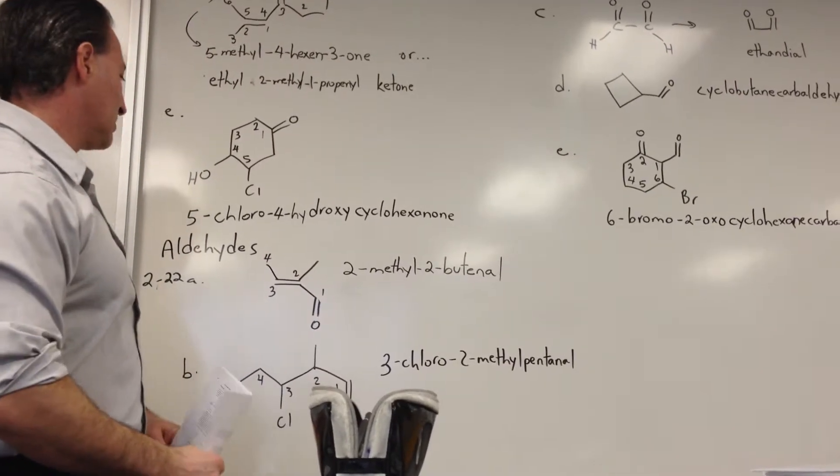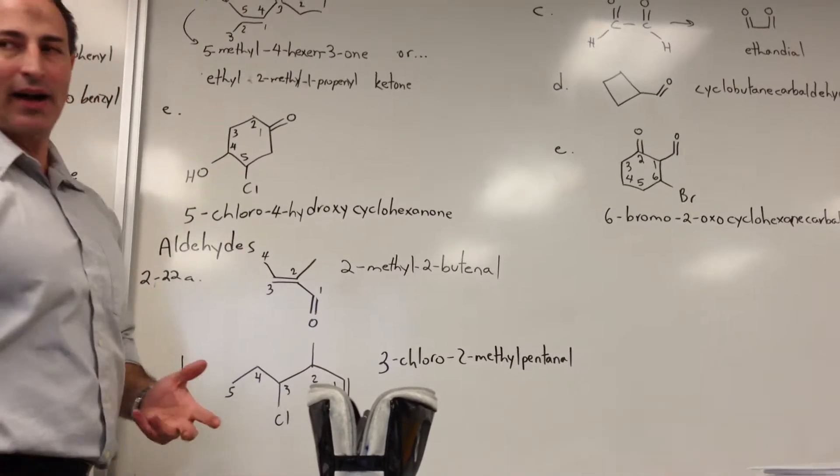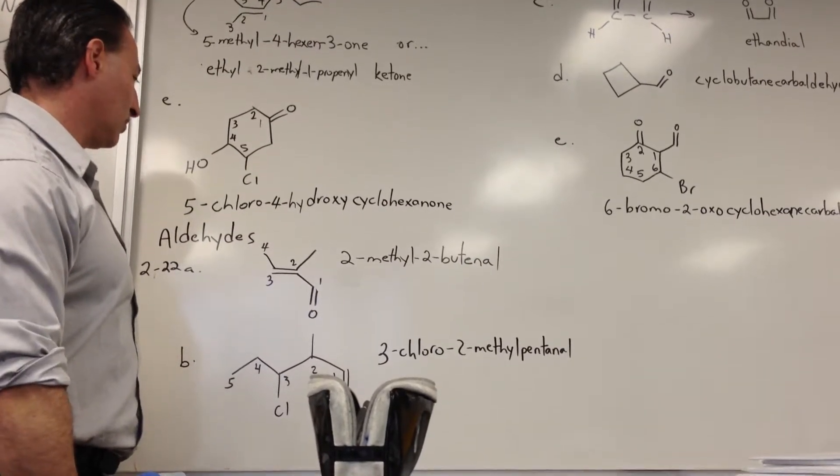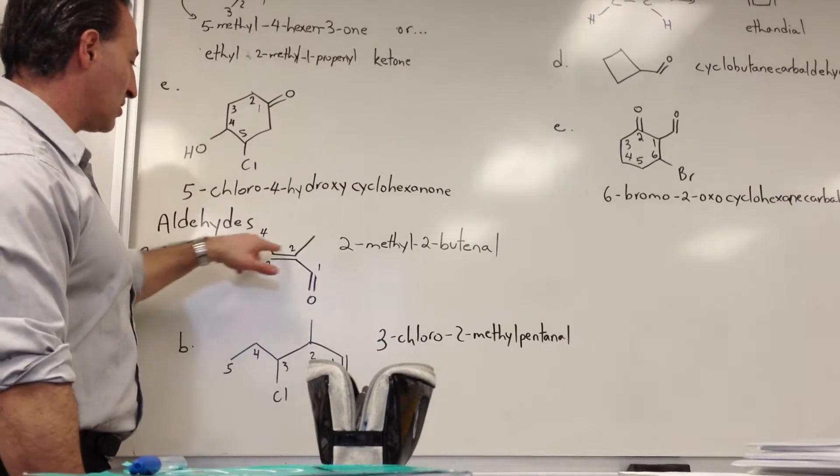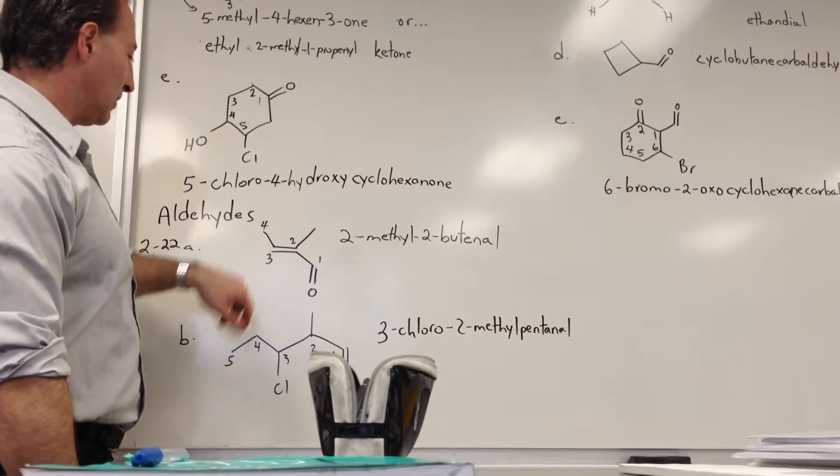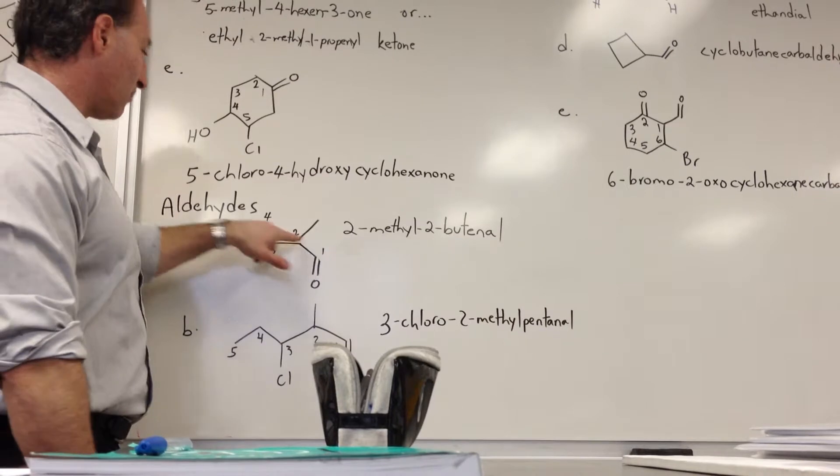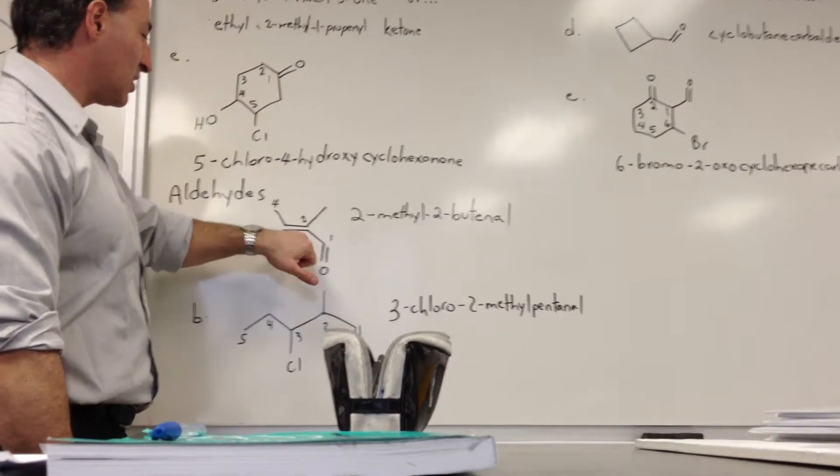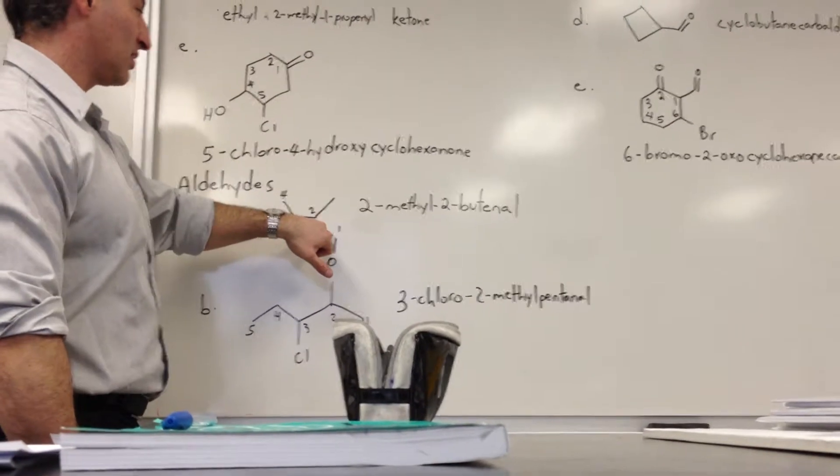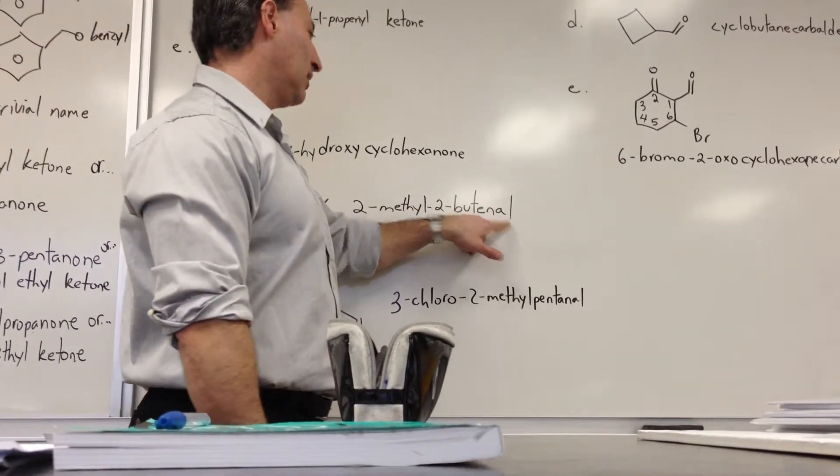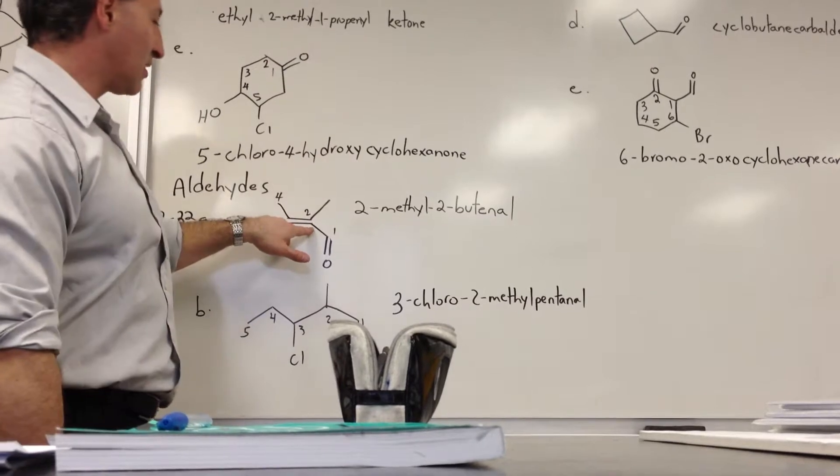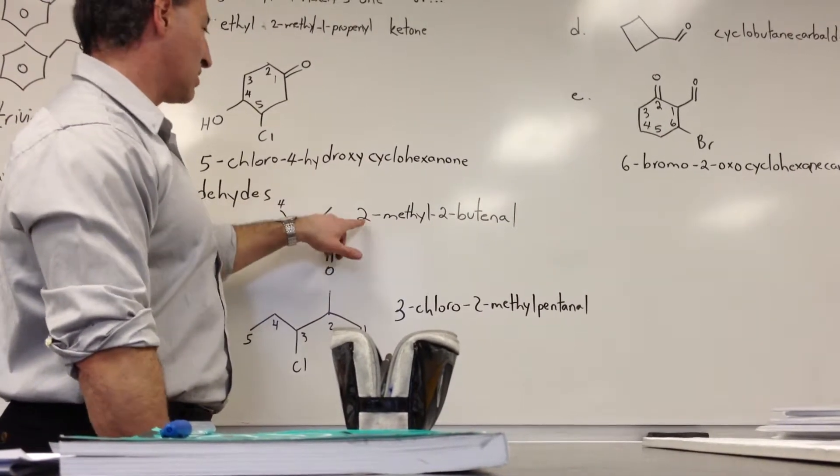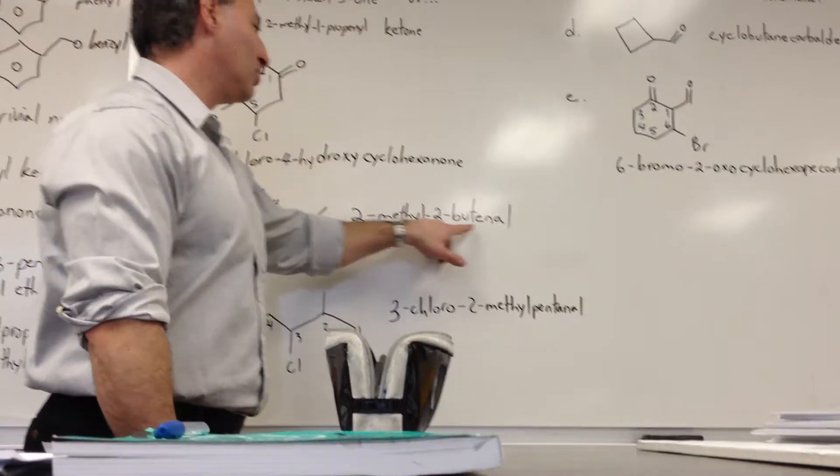Next section, we have aldehydes. Aldehydes have the ending al added to the longest chain in the molecule. The longest chain here is 4 carbons in length: 1, 2, 3, 4. And there's a methyl substituent at the second position. Also the double bond starts at the second position. So you call it a butenal. The 2 refers to the fact that the double bond is here. And the methyl group is also at the second position. So you call it 2-methyl-2-butenal.